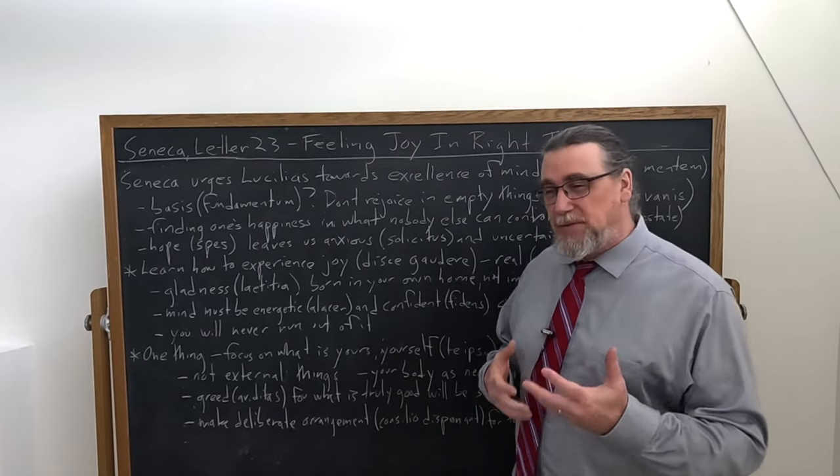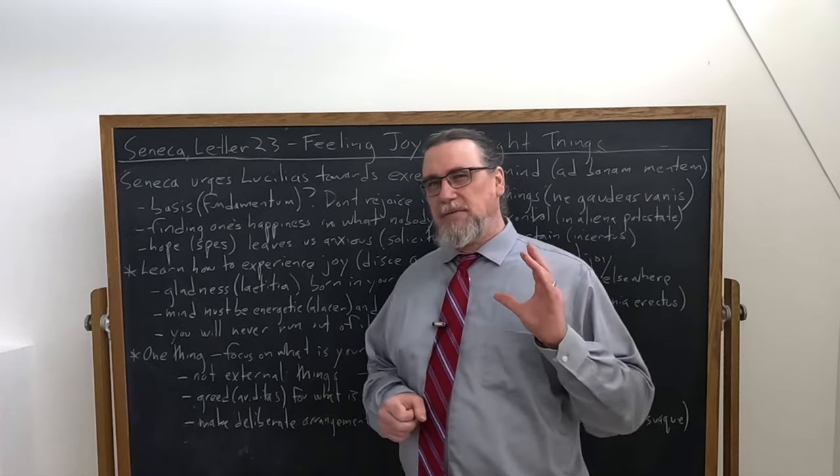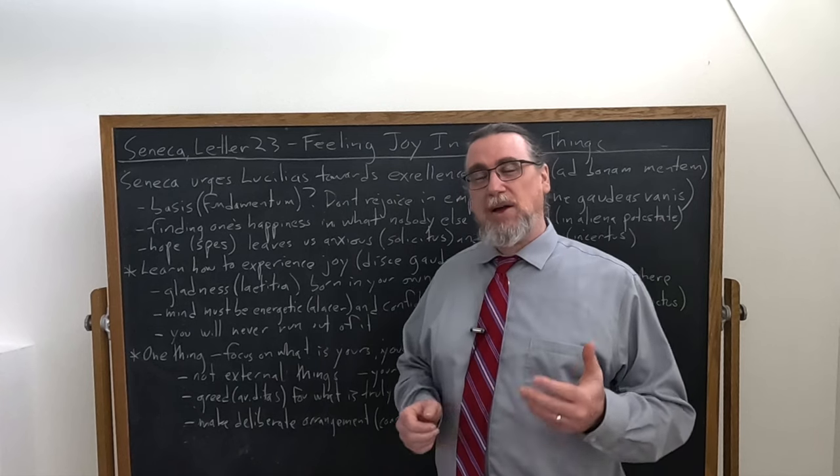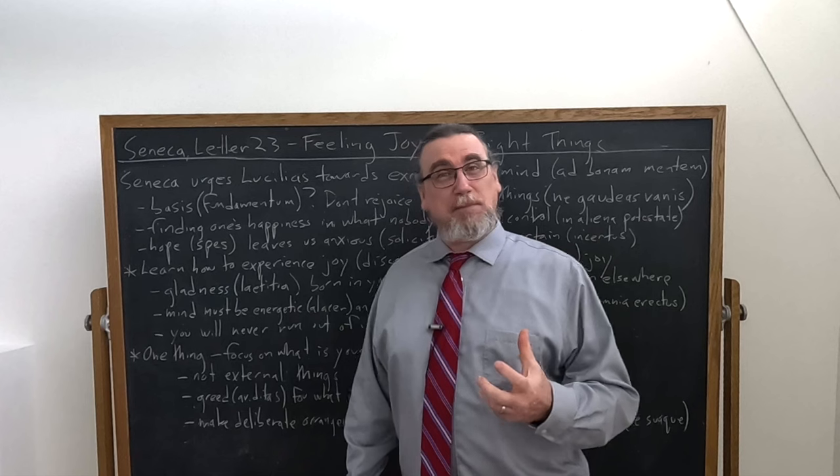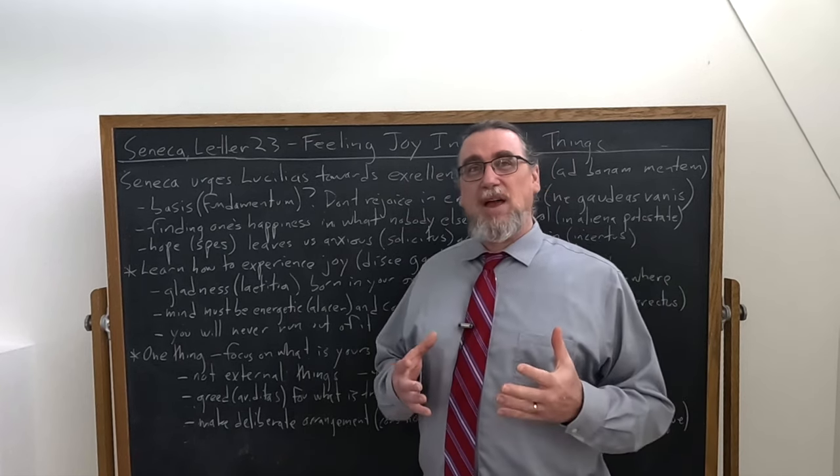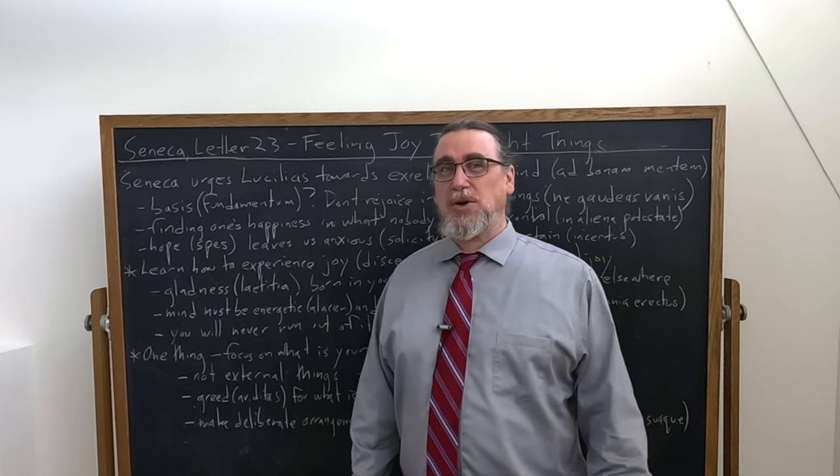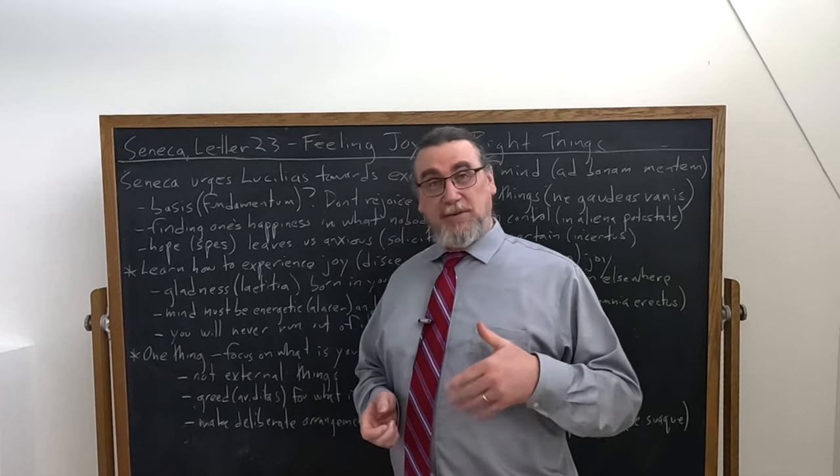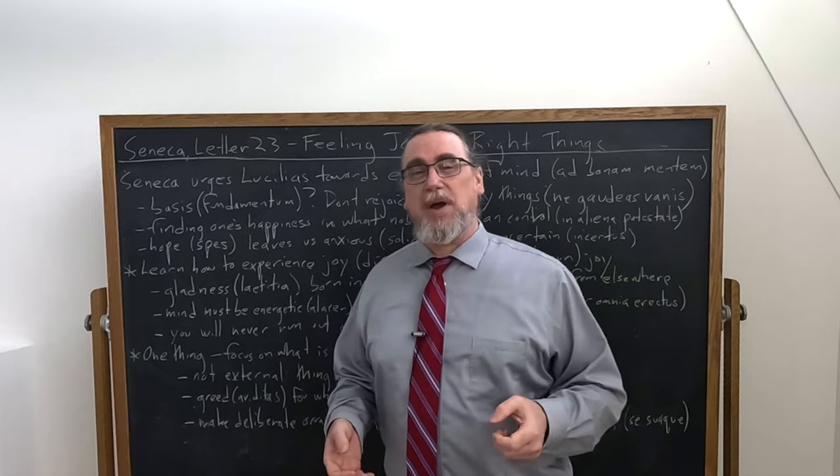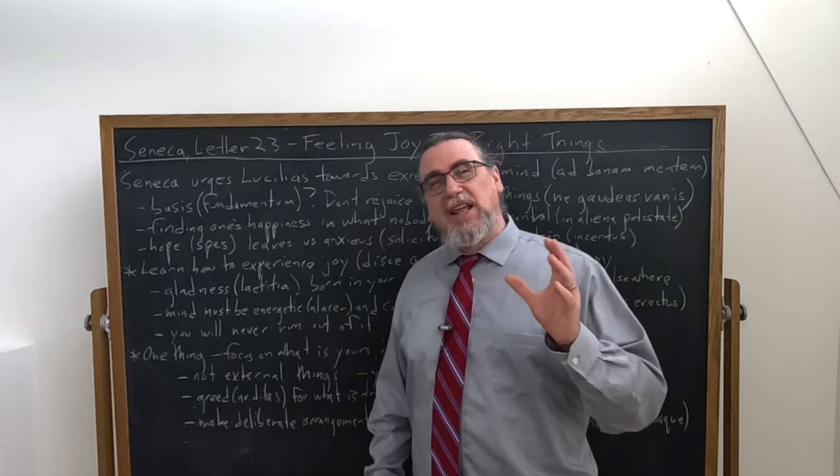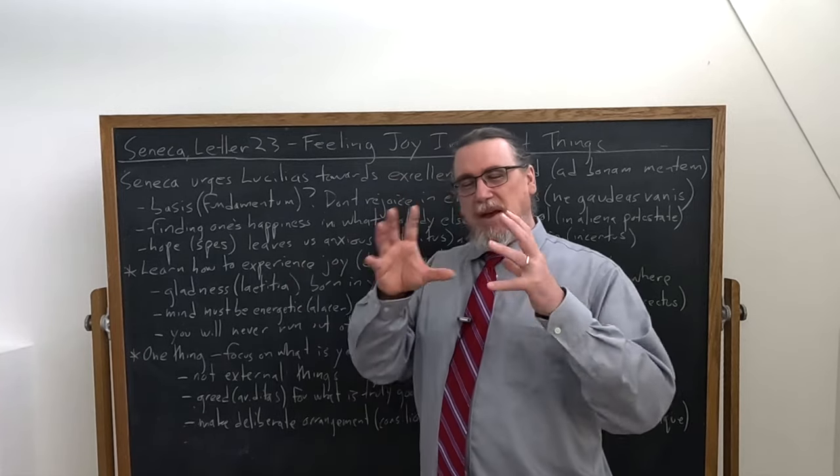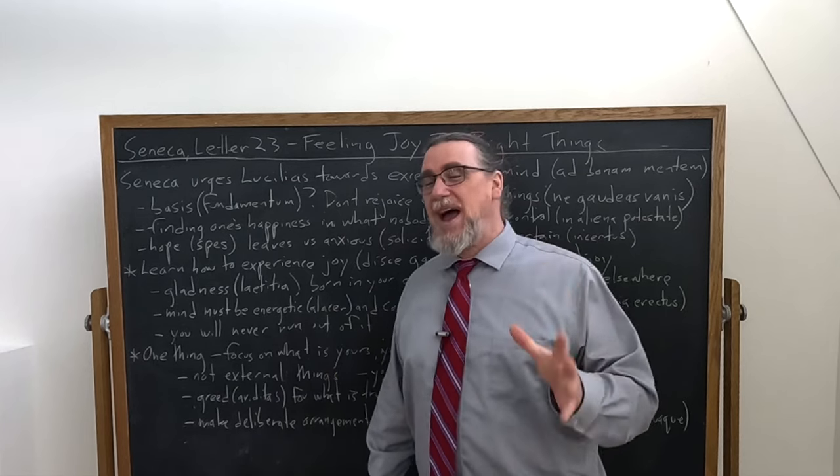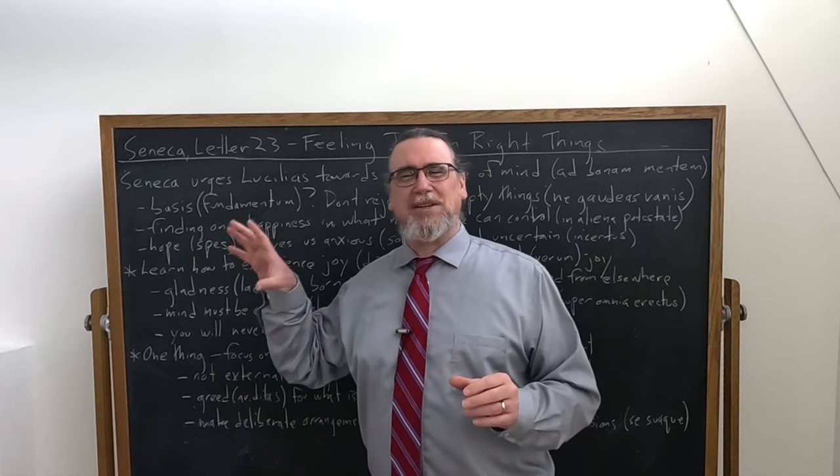Seneca's letter number 23 is a fairly short one, but there's a lot that's packed in there. It's a very important one because in it, we've got this great Stoic philosopher highlighting to his interlocutor the absolute importance and the possibility for us of having a life that is filled with a positive emotional state, with joy. And the joy here is talked about in several ways. It's a verb gaudere, to feel joy, to have joy in your life, and also gladness, laetitia. There's a set of synonyms that connect with each other in this. And Seneca is telling Lucilius, this is available for you.